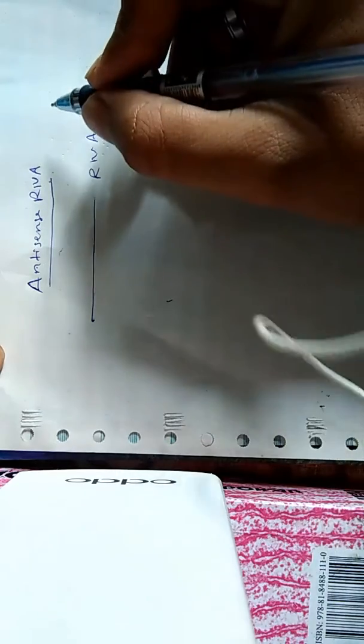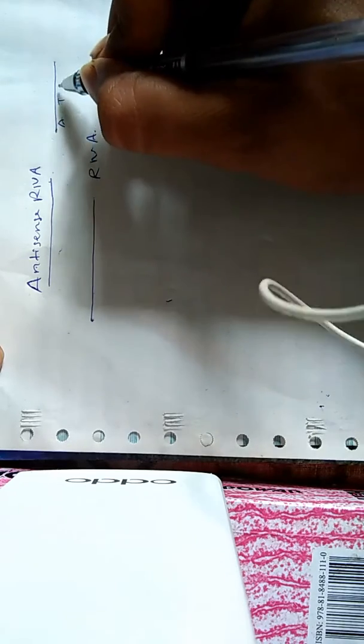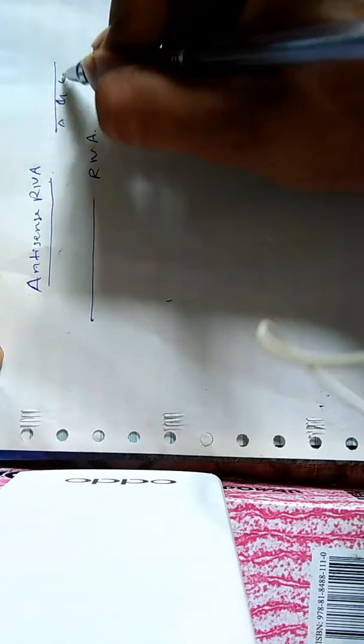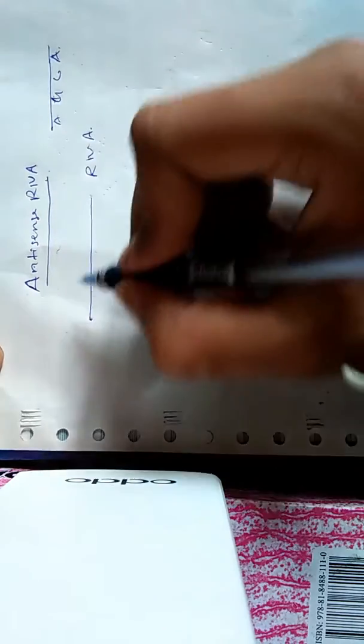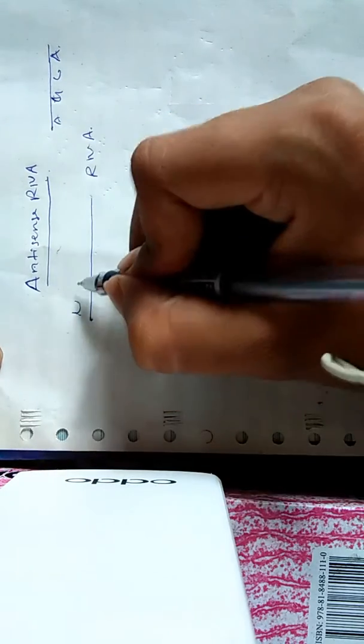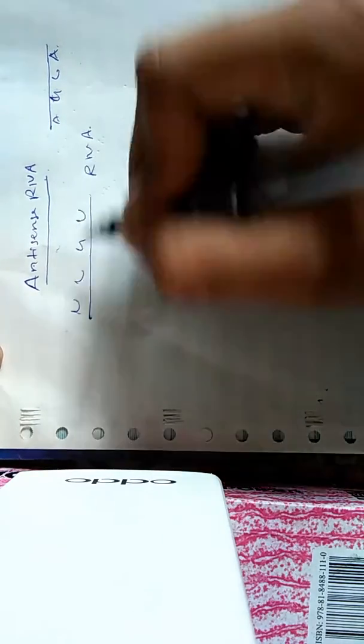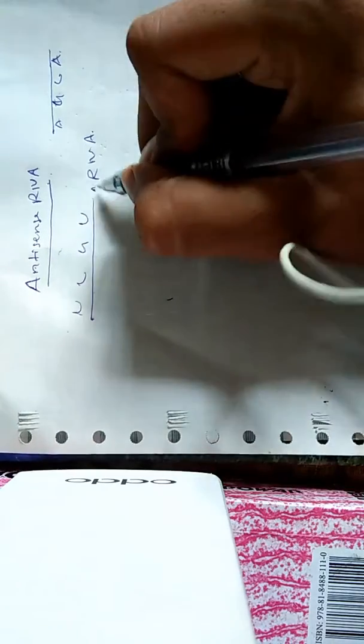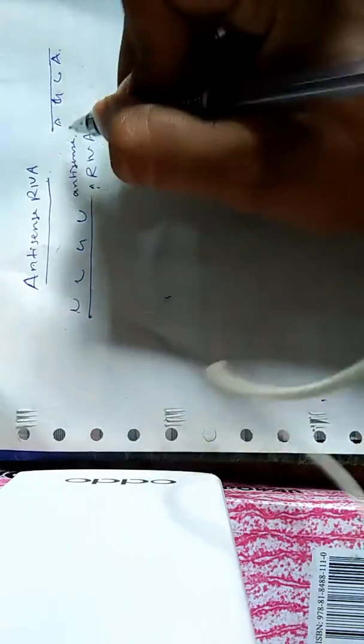which is just complementary to a messenger RNA. If it is a messenger RNA it has A, T, A, G, C, A, then you have U, C, G, U. So we can call it antisense RNA. So different sites...